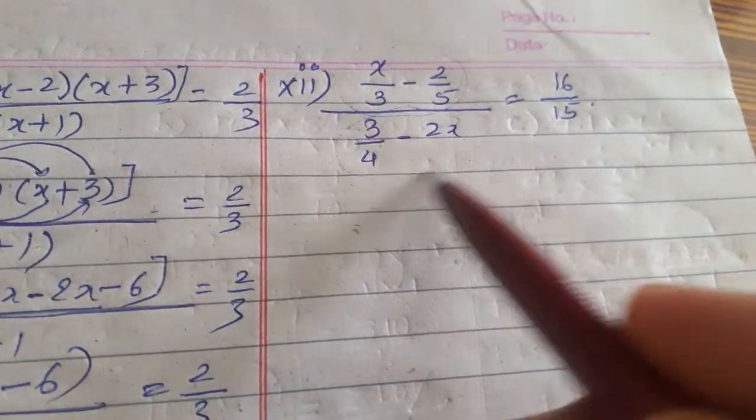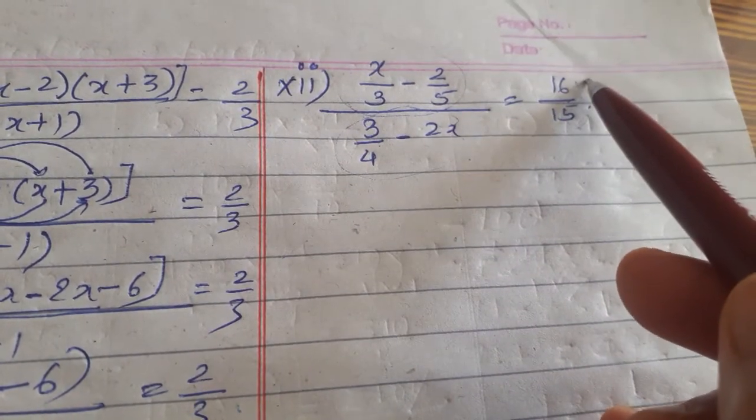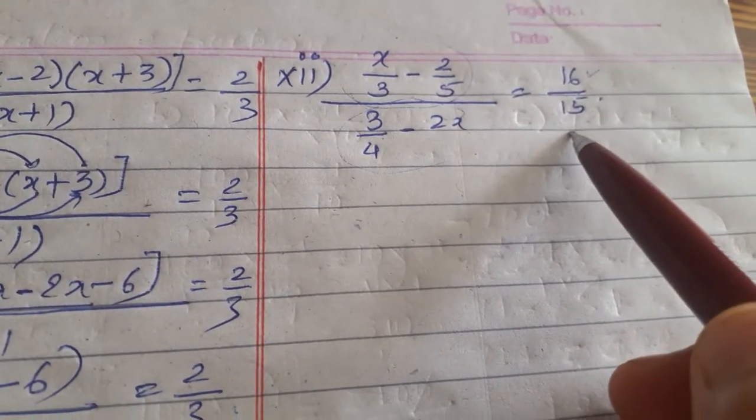This is the numerator, this one is the denominator, these 16 is the numerator on other side, 15 is the denominator on other side.